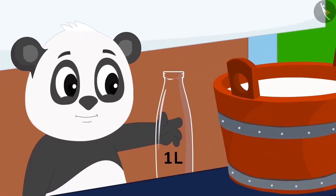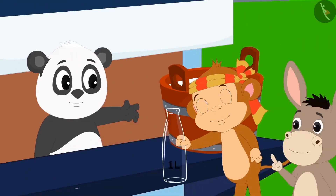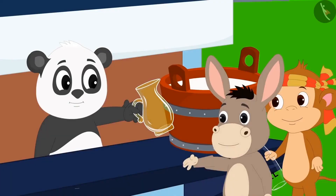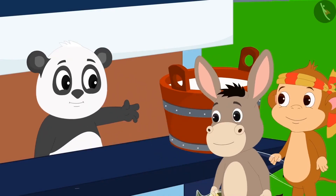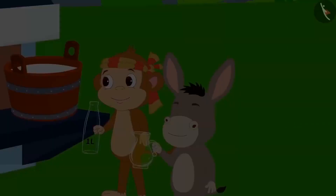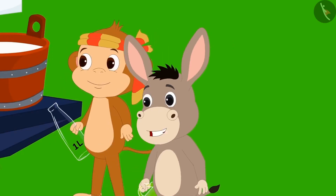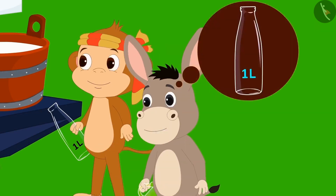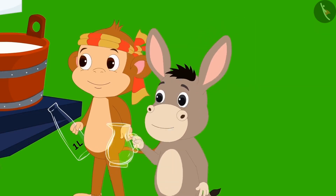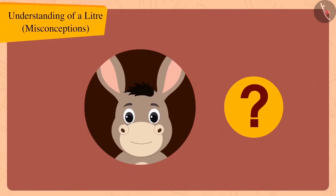But Golu only had one such bottle. He gave that to Babban and gave Bholla a jug instead. Bholla immediately said to Golu, what is this? You gave me this jug instead of a one litre bottle. We can only measure using a one litre bottle, right? Children, do you think Bholla's statement is true?